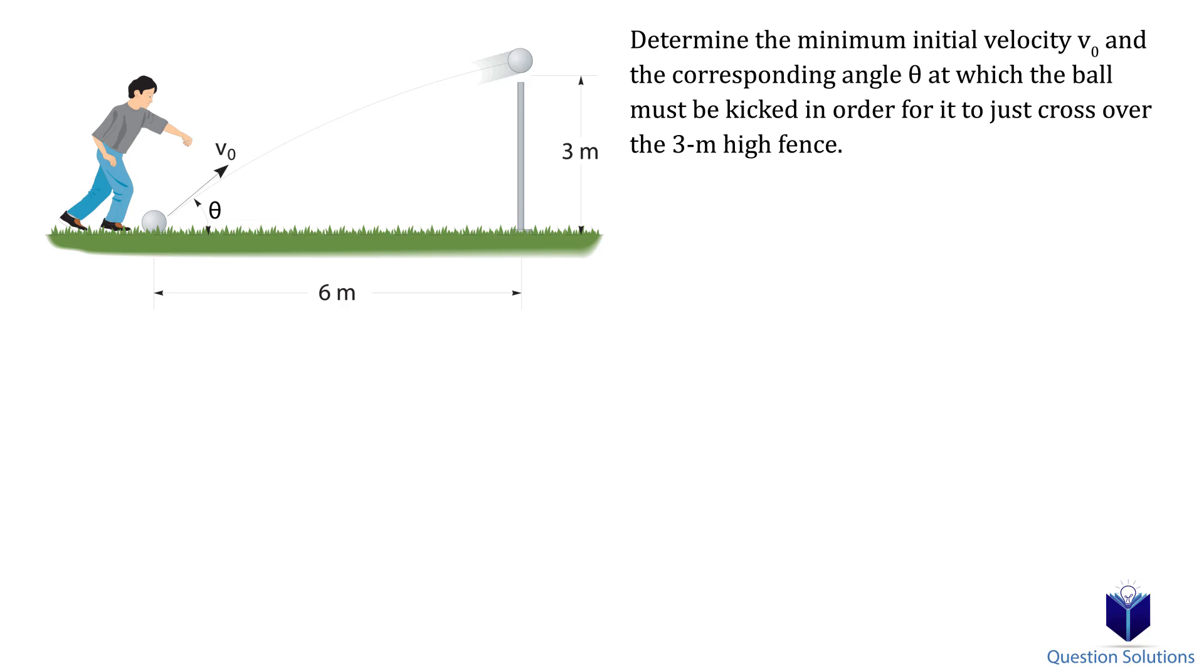This question asks us to calculate the velocity of the ball and the angle it must be kicked at to pass a 3 meter tall fence. Let's draw the illustration simpler with our coordinate system.